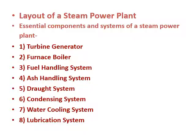Let us see the layout of the steam power plant. The essential components of steam power plants are: turbine generator, furnace boiler, fuel handling system, ash handling system, drought system, condensing system, water cooling system, and lubrication system.